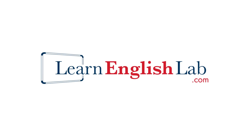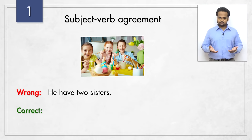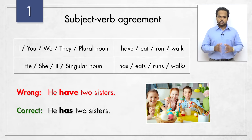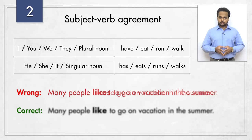Let's begin with subject-verb agreement. Here's our first sentence – 'he have two sisters.' Is that correct? No, it should be 'he has two sisters.' The rule is that if the subject is I, you, we, they or any other plural noun, then we use the verb in its present tense form and we don't add S to the verb. But if the subject is he, she, it or any singular noun, then we add S to the verb. So 'many people likes to go on vacation in the summer' should be 'many people like to go on vacation in the summer.' We have a plural subject – many people – so the verb should not have an S.